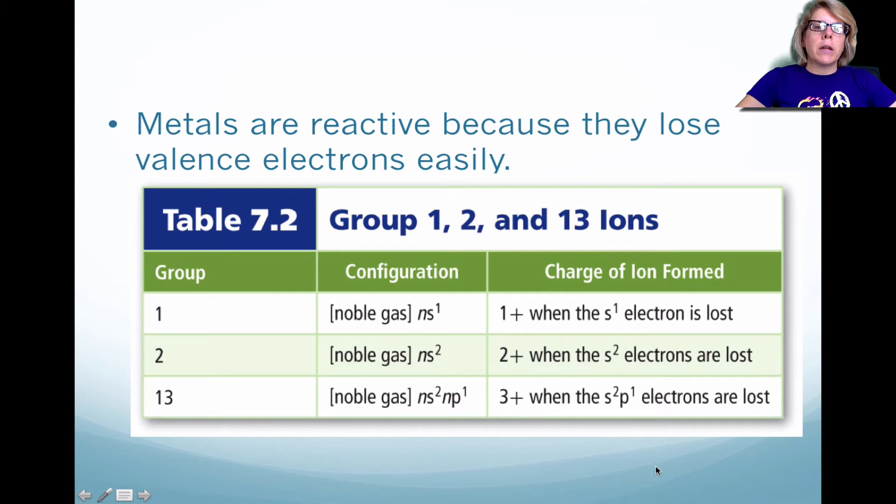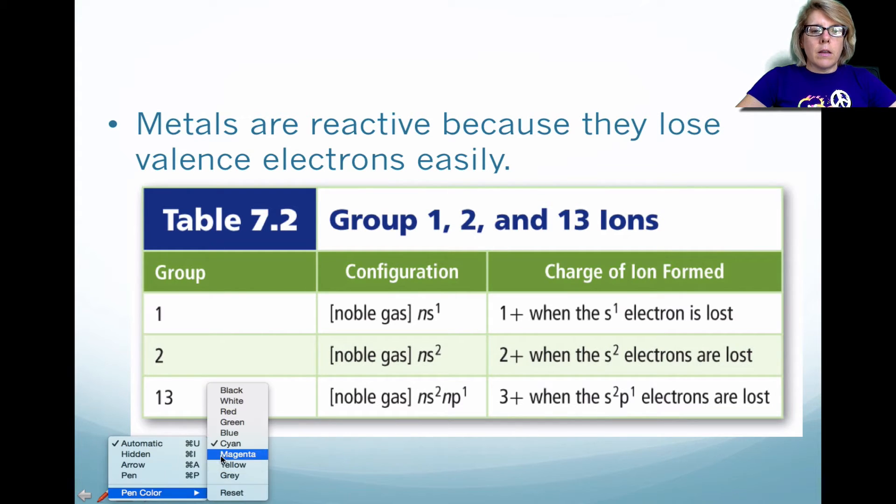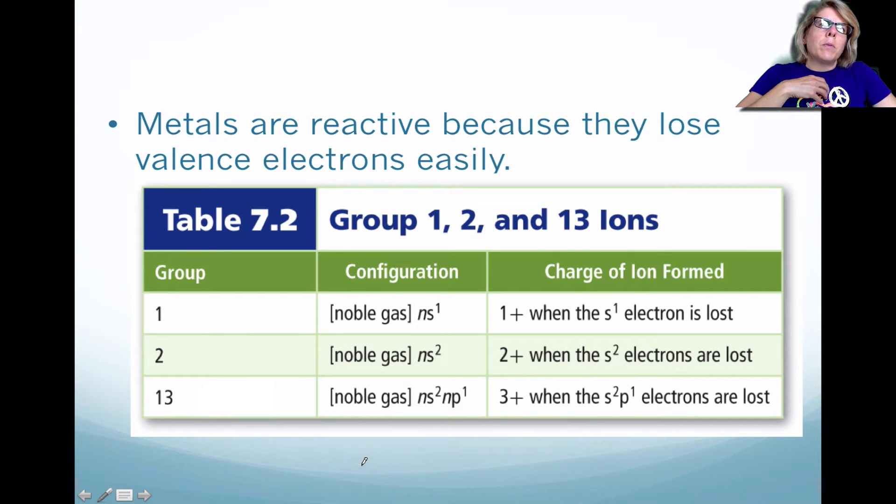Okay. Why would a metal like aluminum lose its valence electrons? Well, the reason why is it actually becomes a noble gas. It's not, aluminum doesn't necessarily become that noble gas, but it becomes noble gas-like. So whatever its valence electrons are here, when it loses those three electrons, it becomes like the noble gas that is in the row above it.